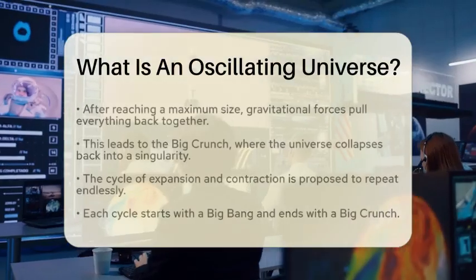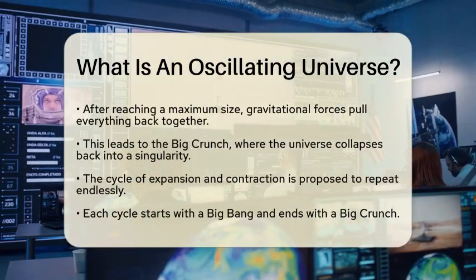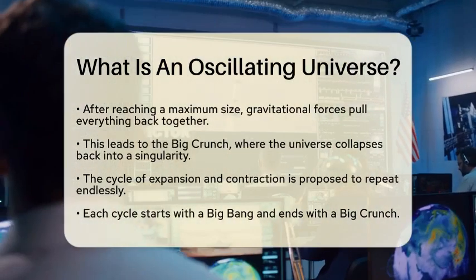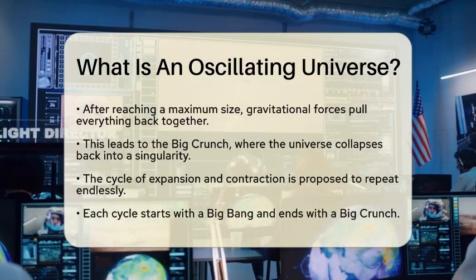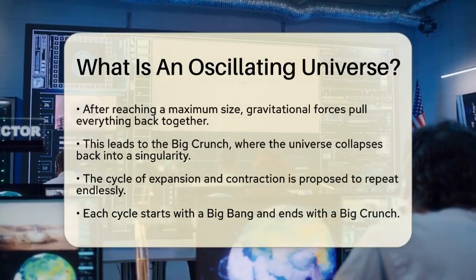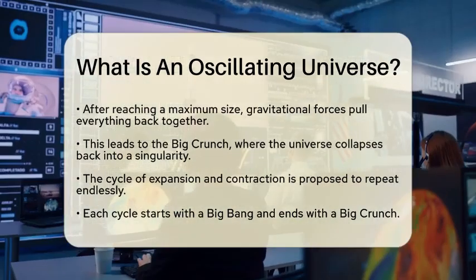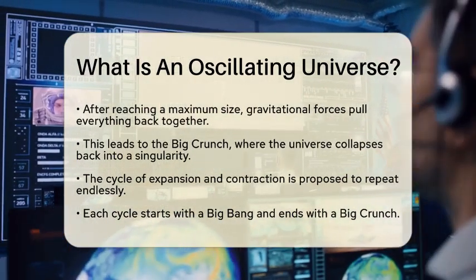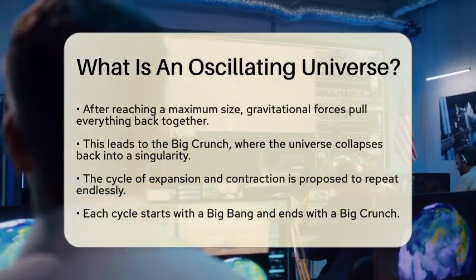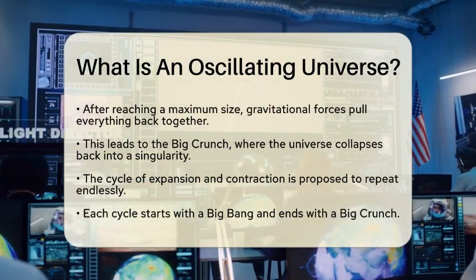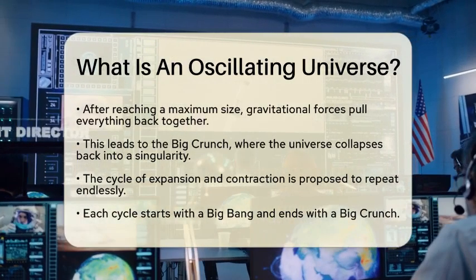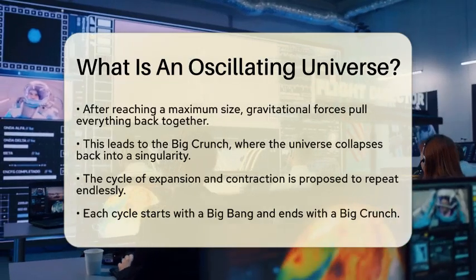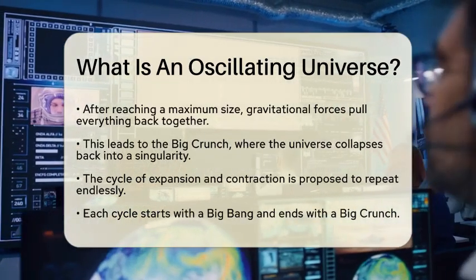As time goes on, the universe continues to expand until it reaches a maximum size. At this peak, the gravitational forces among all the matter in the universe start to take over. These forces pull everything back together, leading to a phase known as the Big Crunch. This is when the universe collapses back into a singularity, where the laws of physics as we know them cease to function properly due to extreme conditions.